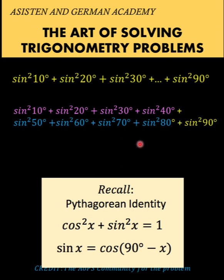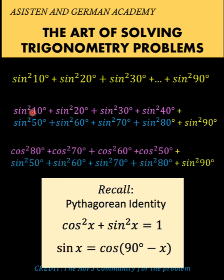Notice that 10 degrees and 80 degrees are complementary angles, 20 and 70 are complementary angles, the same with 30 and 60, and 40 and 50 — these fit the cofunction identity. In order to have cosine squared x plus sine squared x, we can transform each of the pink terms into the corresponding cosine function. So instead of sine squared 10 degrees, we rewrite it as cosine squared 80 degrees.